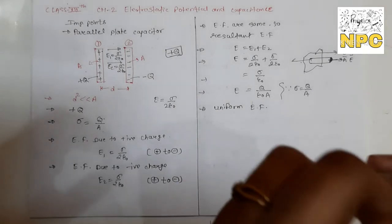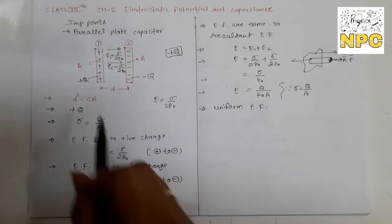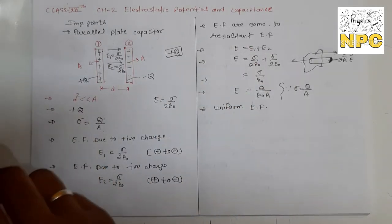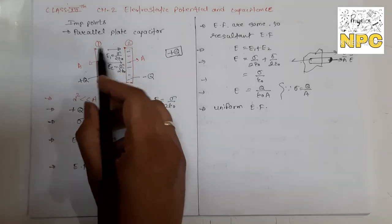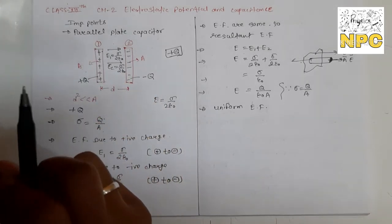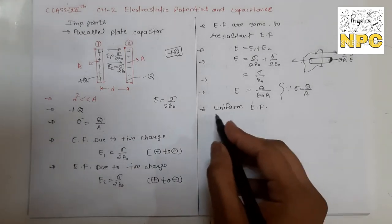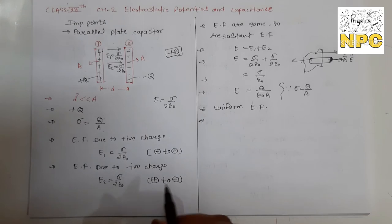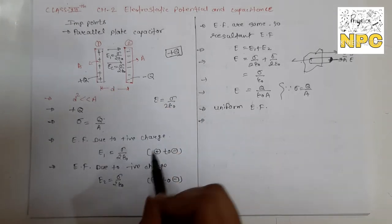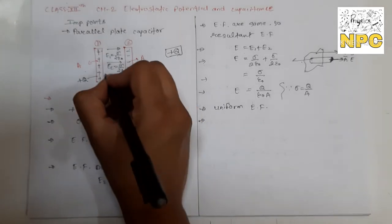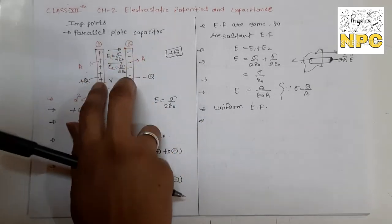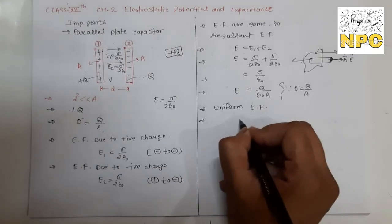From the equation C = ε₀·A/d, we can see that capacitance depends on the area of the plate and the distance between the plates. If the area A is large, the capacitance increases. If the distance d is very small, the capacitance also increases. So for high capacitance, you need a large plate area and a small separation between the plates.